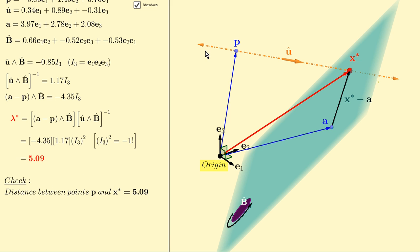In this case, we can calculate the distance between the points p and x star, and we find that it is indeed 5.09 units.